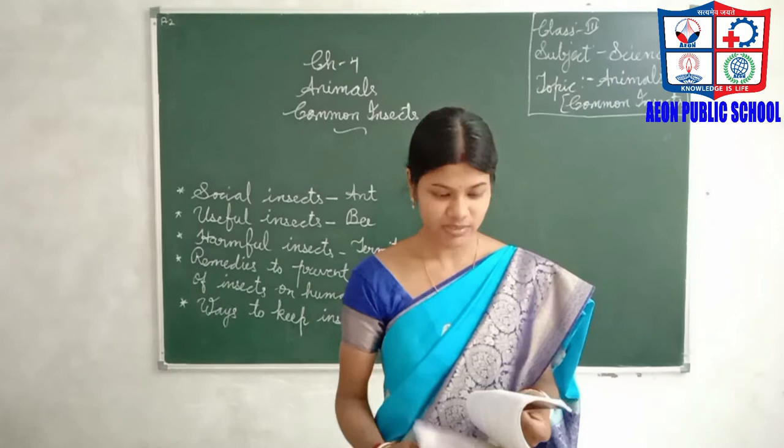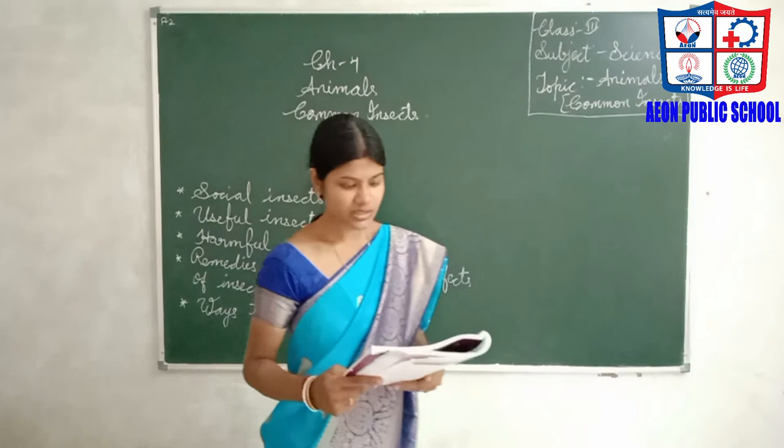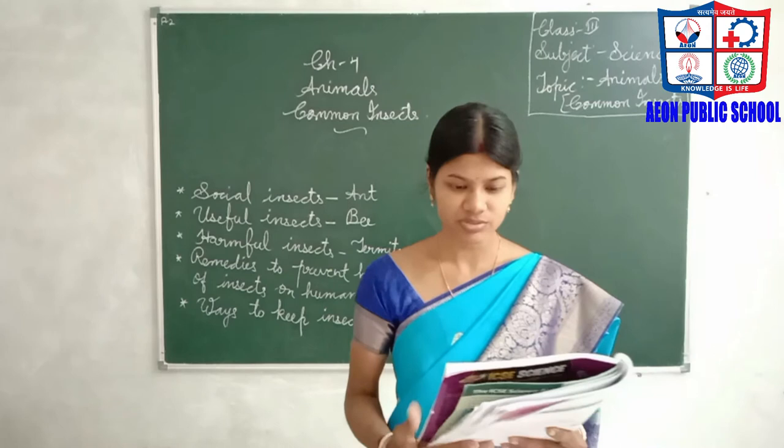In the previous video we have learnt about the life cycle of a butterfly. Now we will learn about the social insects, taking ants as an example. Some insects are social and do not live alone. See page number 39. The purpose of living together in colonies is to get protection from enemies and share food, work and shelter.